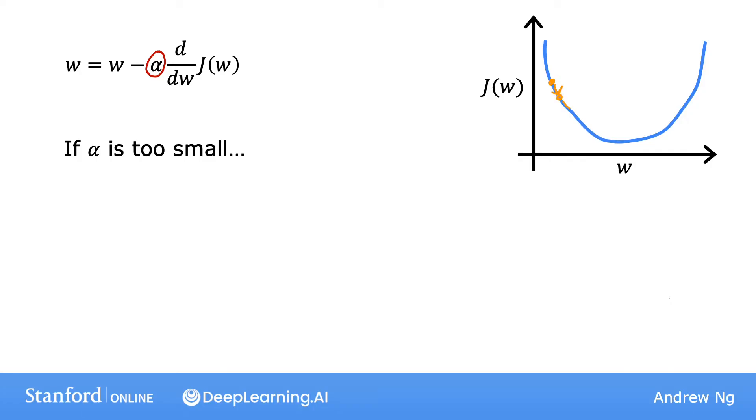Then from this point, you're going to take another tiny little baby step. But because the learning rate is so small, the second step is also just minuscule. The outcome of this process is that you do end up decreasing the cost J, but incredibly slowly. So here's another step, and another step, another tiny step until you finally approach the minimum.